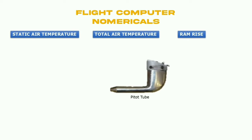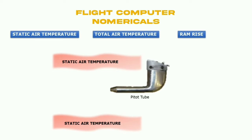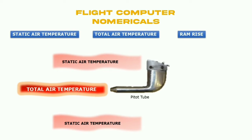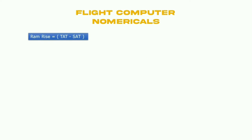The pitot tube is basically used to measure the flow of air velocity and give air speed of the aircraft. Static air temperature is the outside air temperature which is undisturbed by the aircraft, but the situation is different when air gets inside the pitot tube. Due to friction and compression it becomes hotter than static air temperature, which causes incorrect information in the instrument. The amount of heat increase due to compression is called ram rise.